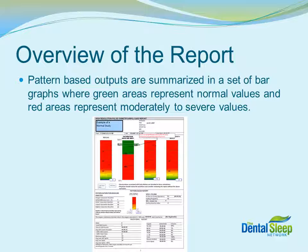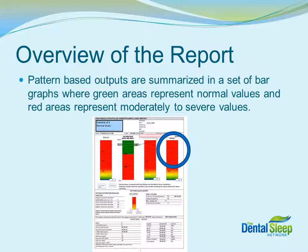Pattern-based outputs are summarized in a set of bar graphs on this report. In all of the graphs, green represents normal values and red areas represent moderate to severe values. So when looking at any of these graphs, it's important to note that if any of the results are shown in the orange to red areas, that means the patient is at high risk or there are other health issues. So green is good, red is bad. Here's an example of results falling within the green area, or a normal representation. Anything that appears in the red area needs to be looked at and represents typically high risk.